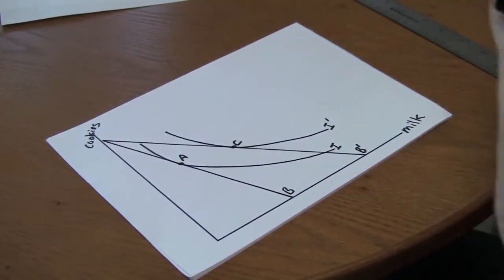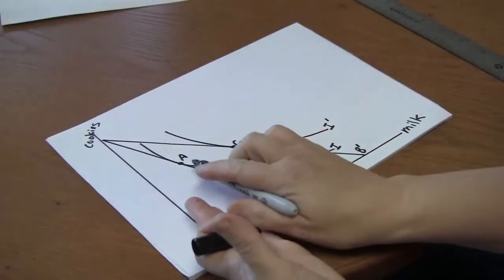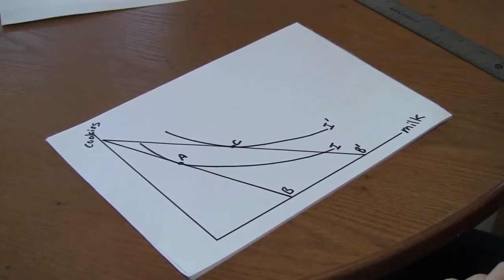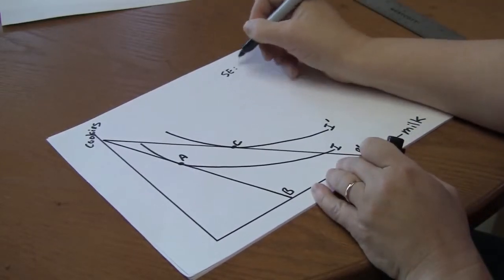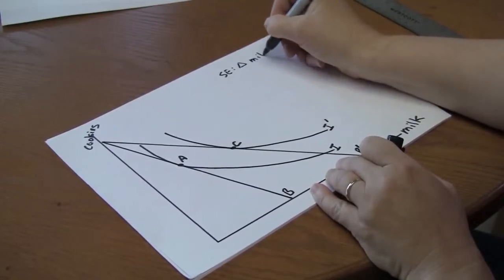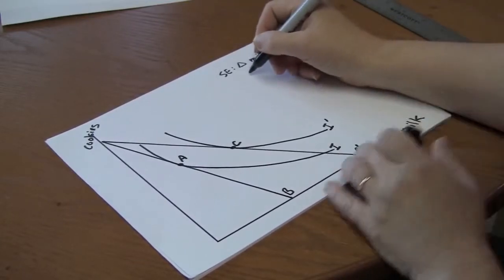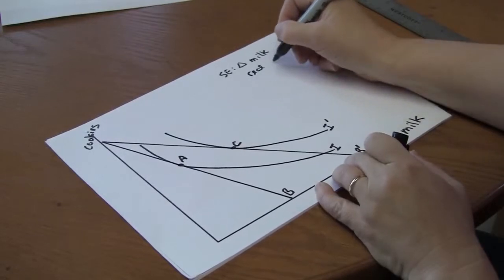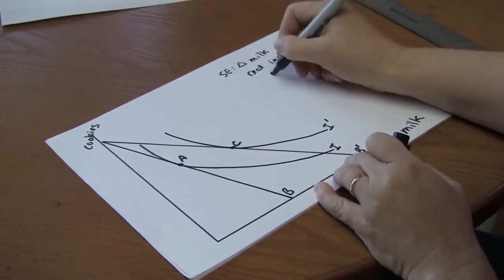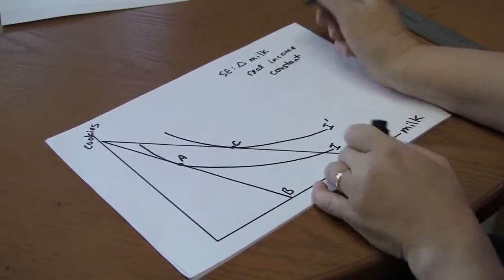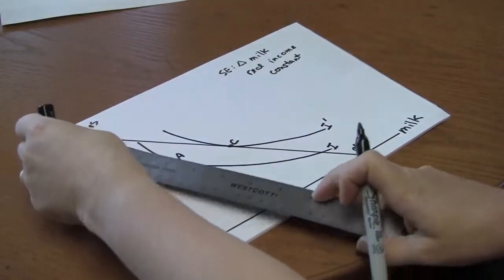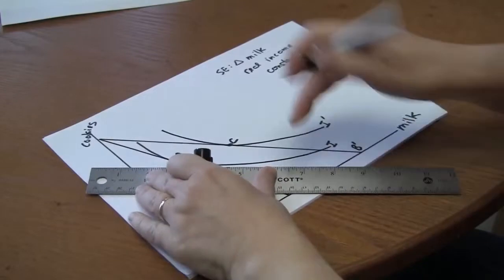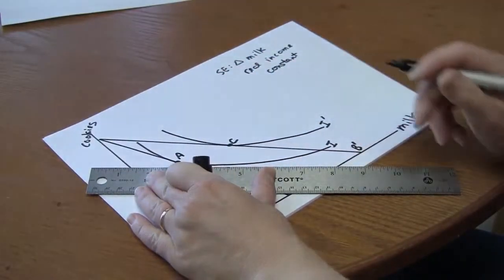Now I want to break down that change in consumption choices into a substitution effect and an income effect. The substitution effect is equal to the change in milk consumed holding real income constant. What that means is it's the effect of the price decrease keeping the consumer on their original indifference curve.